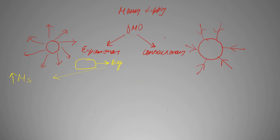Similarly, in contractionary policy, since they basically aim to decrease the money supply, they'll sell the bond to the people and take away money, which will reduce money supply in an economy.